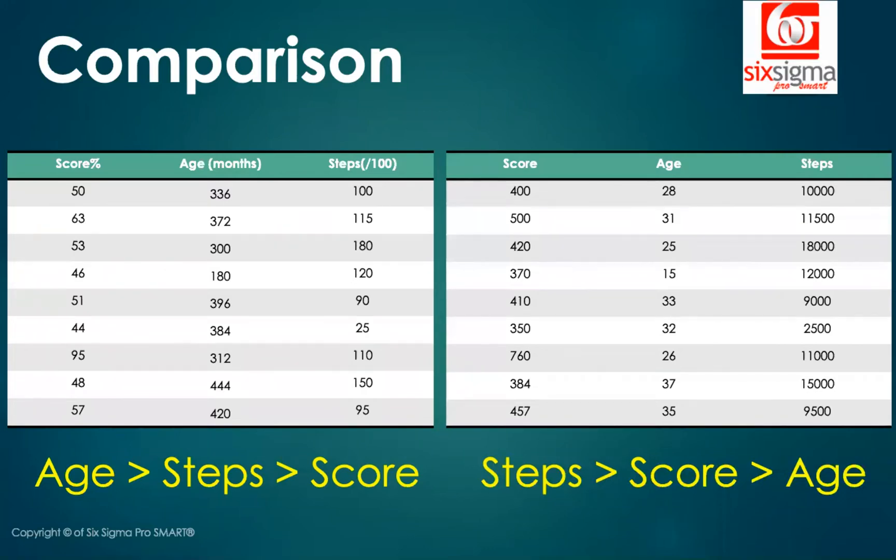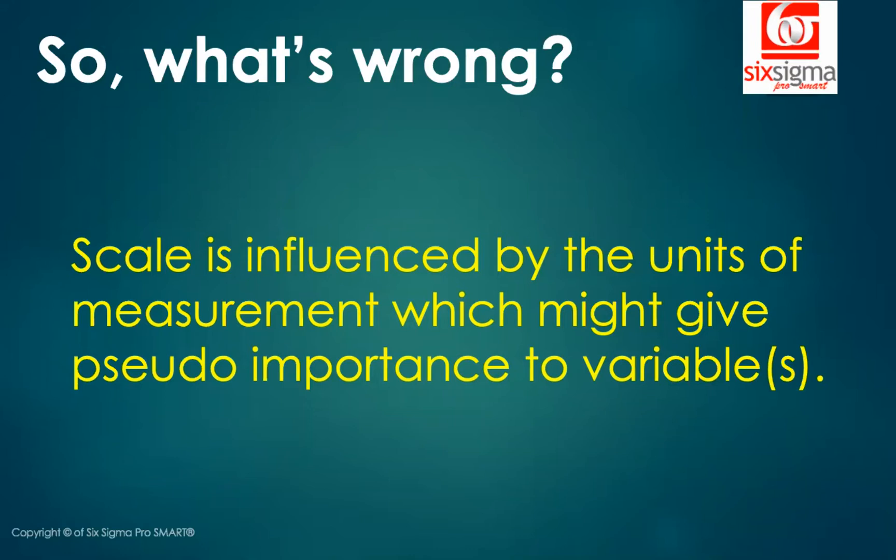So now you see there is a problem due to the scale. You're not able to figure out which variable is relatively more important. Therefore, we can conclude that scale is influenced by the units of measurement, which might give pseudo importance or false importance to variables. And that's why it is important to bring the variables on the same scale.